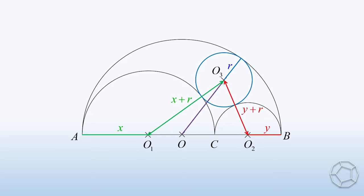Let's construct OO3, and extend it to intersect the largest semicircle at the point D. What about the length of OO3? You see, the length of AB is the sum of the two diameters AC and BC. It is equal to 2X plus 2Y. Therefore, the radius OA, OD and OB are all equal to X plus Y.